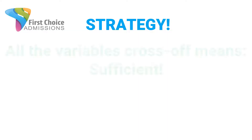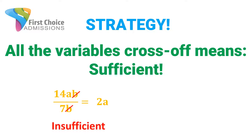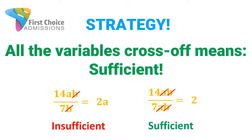Quick strategy review. Whenever you're in a percent or ratio data sufficiency question, your job is to get all of the variables to cross off, because if you can't get all the variables to cross off, we don't know exactly what the value of that ratio is — it's insufficient. But if we can get all the variables to cross off, then we do know the exact value of that ratio or percent, so it is sufficient.